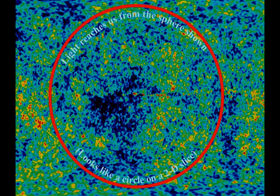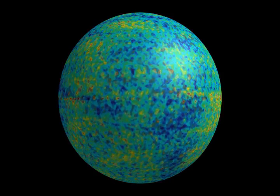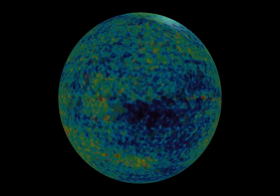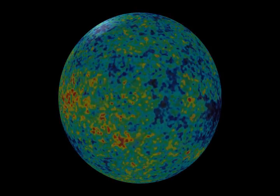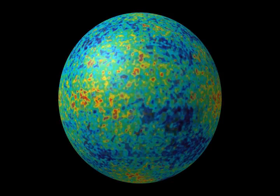Photons reaching us today from this mixture have been traveling to us from a sphere centered around us. To help visualize it, we are only going to show a two-dimensional slice. Everything we see in the universe today through telescopes had to be created within this sphere. We call this the edge of the observable universe. Nothing outside it is visible to us.